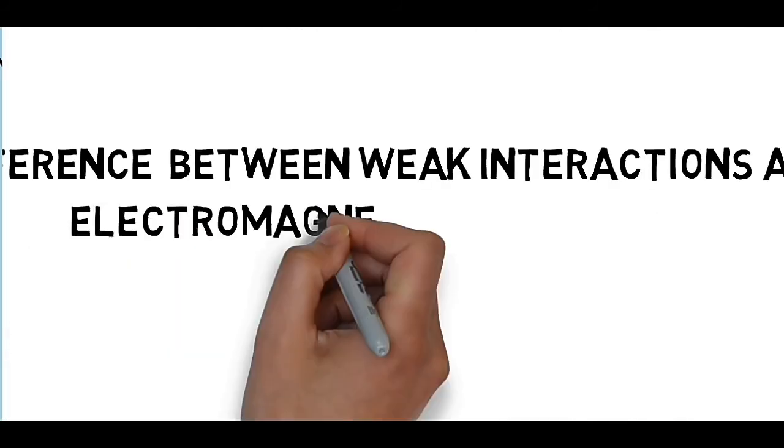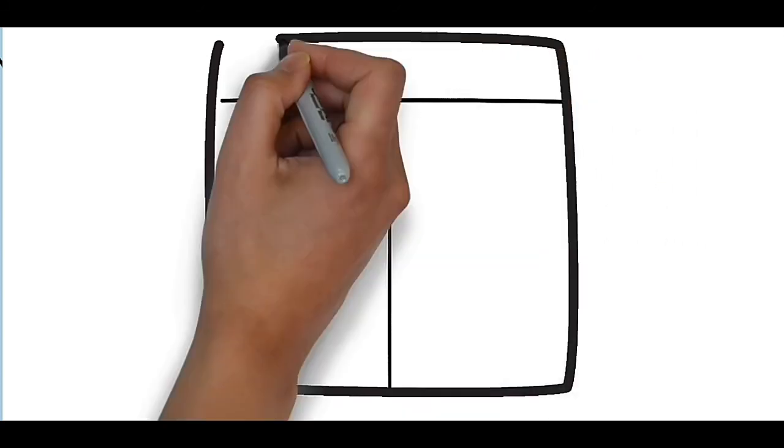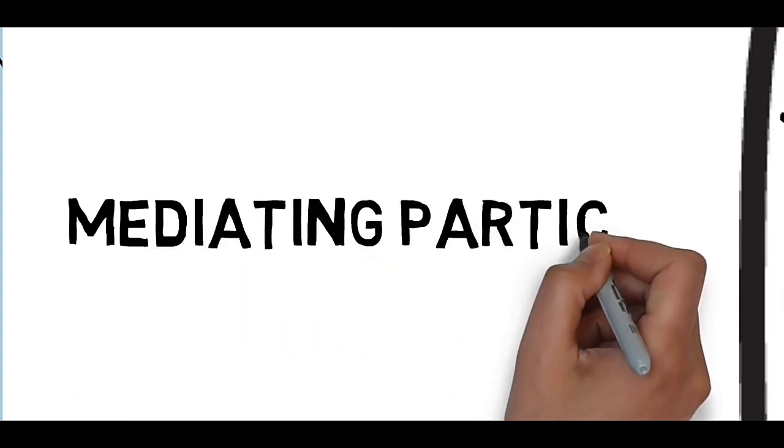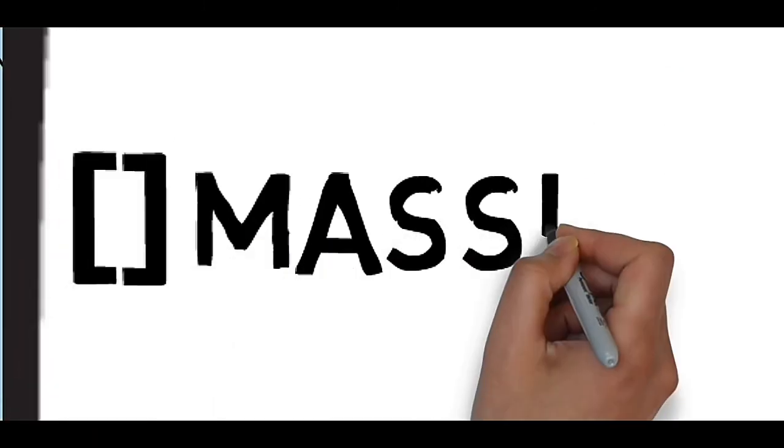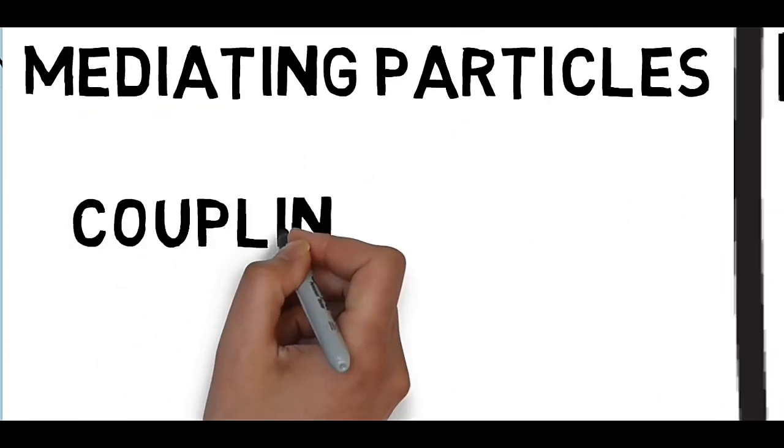We know that weak interaction and electromagnetic interaction were symmetrical forces earlier, but now they are not. We know what happened, when happened, why happened, and how it happened. But what about the asymmetries and the difference between the two forces? Due to the spontaneous symmetry breaking, W and Z bosons became massive, while photons remained massless.